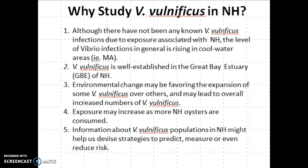Secondly, Vibrio vulnificus is well established in the Great Bay estuary of New Hampshire — we know that it is there. Thirdly, environmental change may be favoring the expansion of some Vibrio vulnificus over others, potentially increasing total numbers and changing which varieties are present. It would be best to know if that meant more pathogenic Vibrio vulnificus. Fourth, exposure may increase as more New Hampshire oysters are being consumed today than in the past. Finally, information about Vibrio vulnificus populations in New Hampshire can help us devise strategies to predict, measure, or even reduce risk to human health.